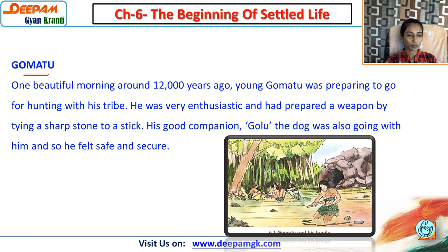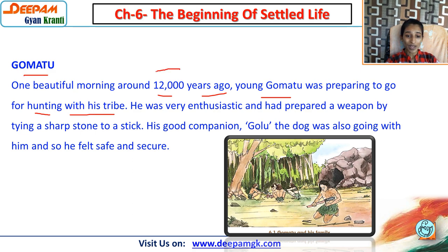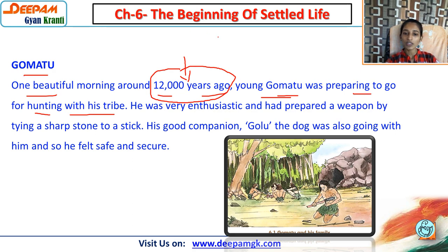The first story is about Gomatu. One beautiful morning around 12,000 years ago, young Gomatu was preparing to go for hunting with his tribe. Early humans were hunters - 'shikar karna' - they did not eat the food we eat today.